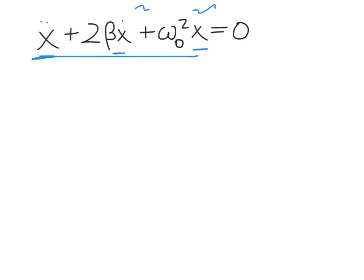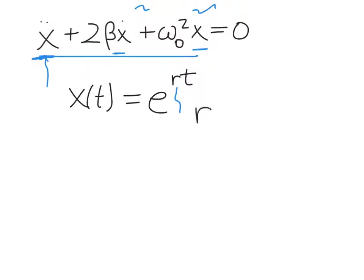We're looking for a solution for x as a function of time — the displacement from equilibrium as a function of time. From your differential equations class, a second-order differential equation requires at least two linearly independent solutions. As the book describes, we assume a solution of the simple form e^(rt), with the understanding that r can be imaginary. Depending on the relative values of beta and omega naught, r will have both a real and an imaginary component.